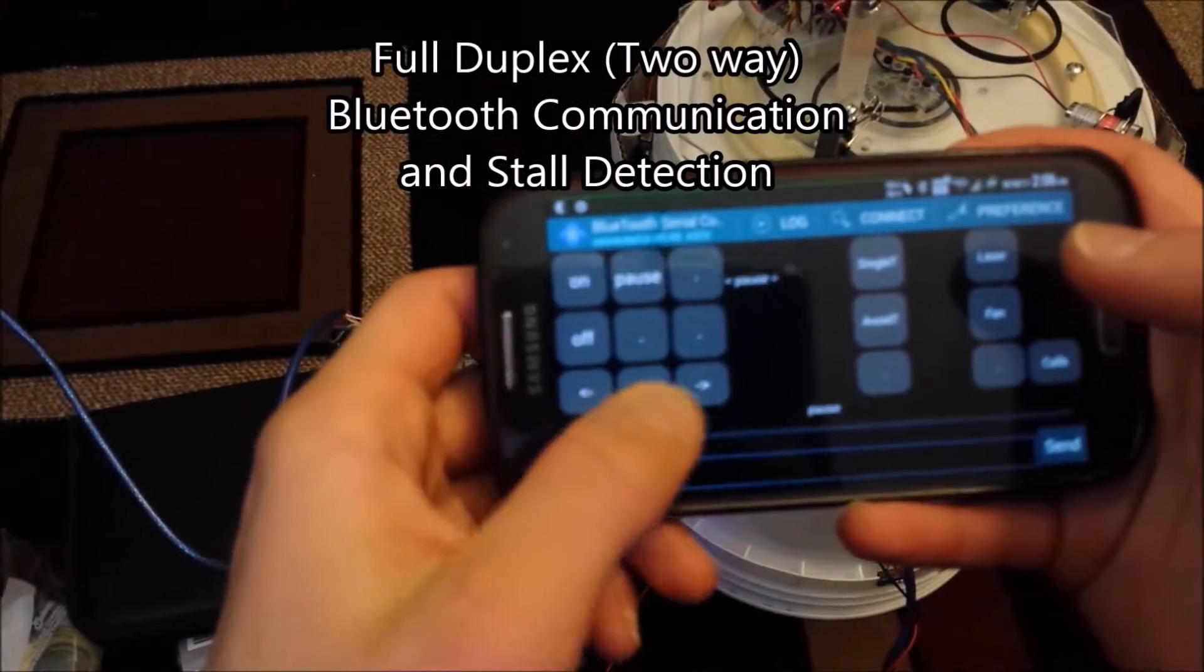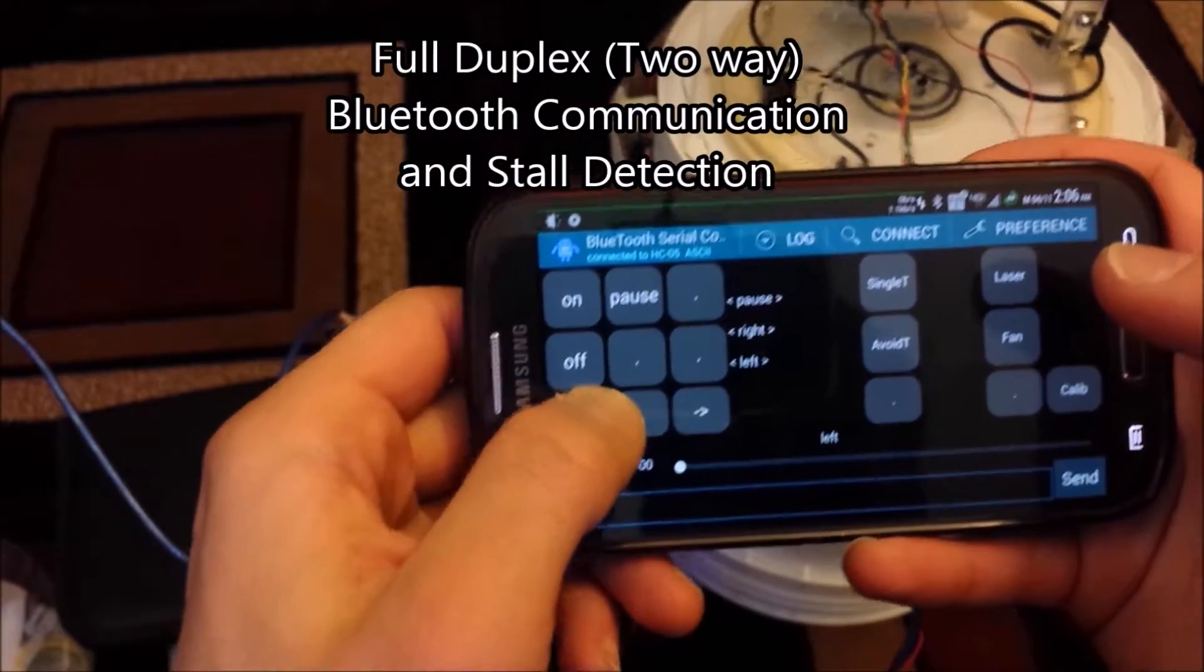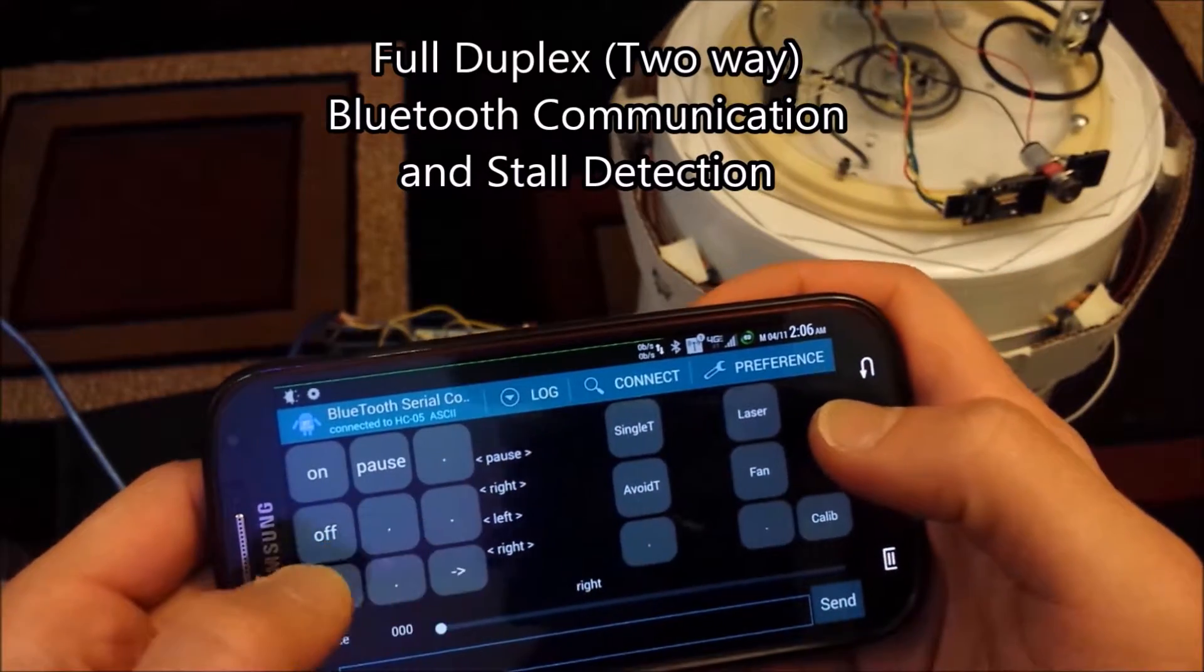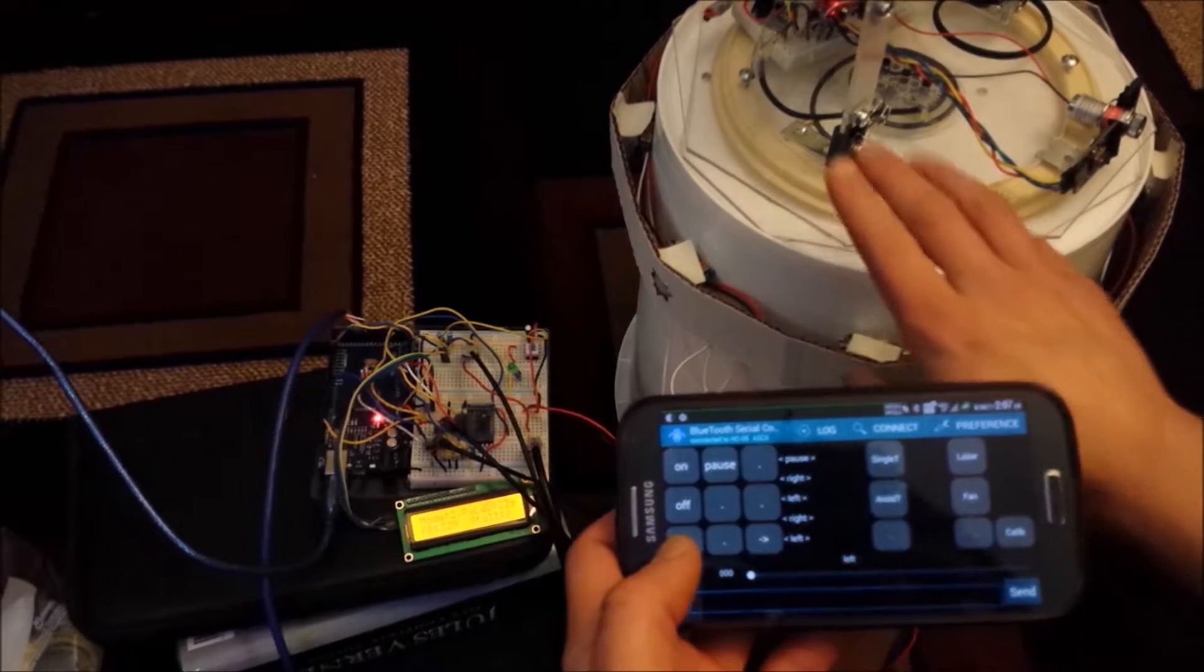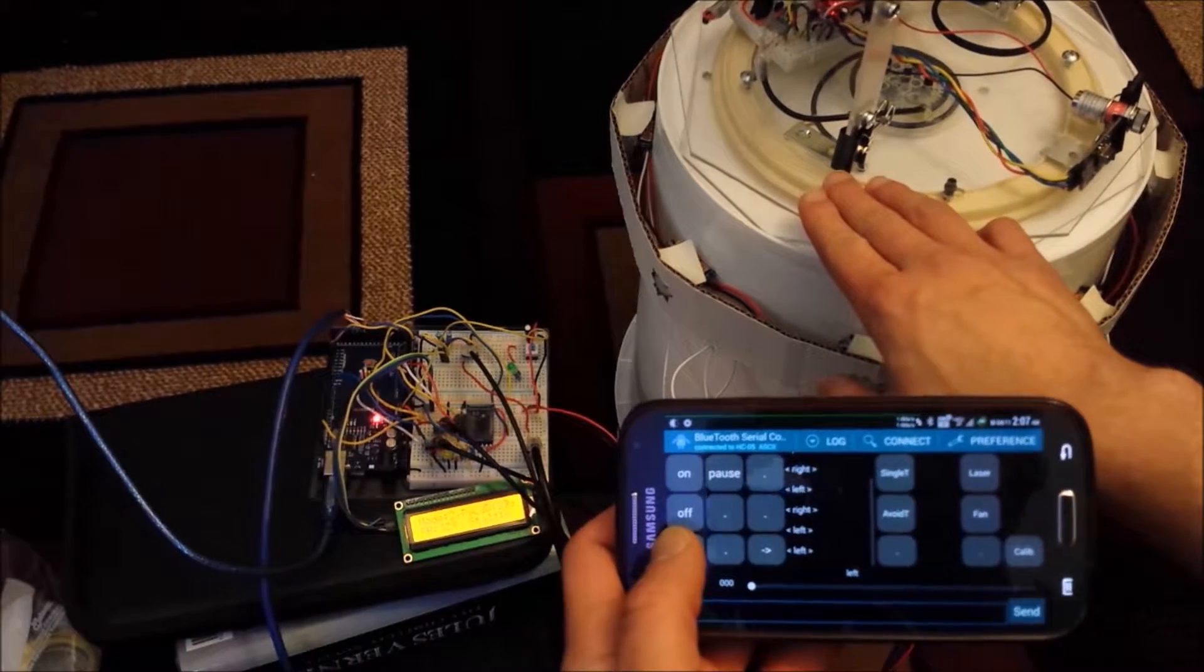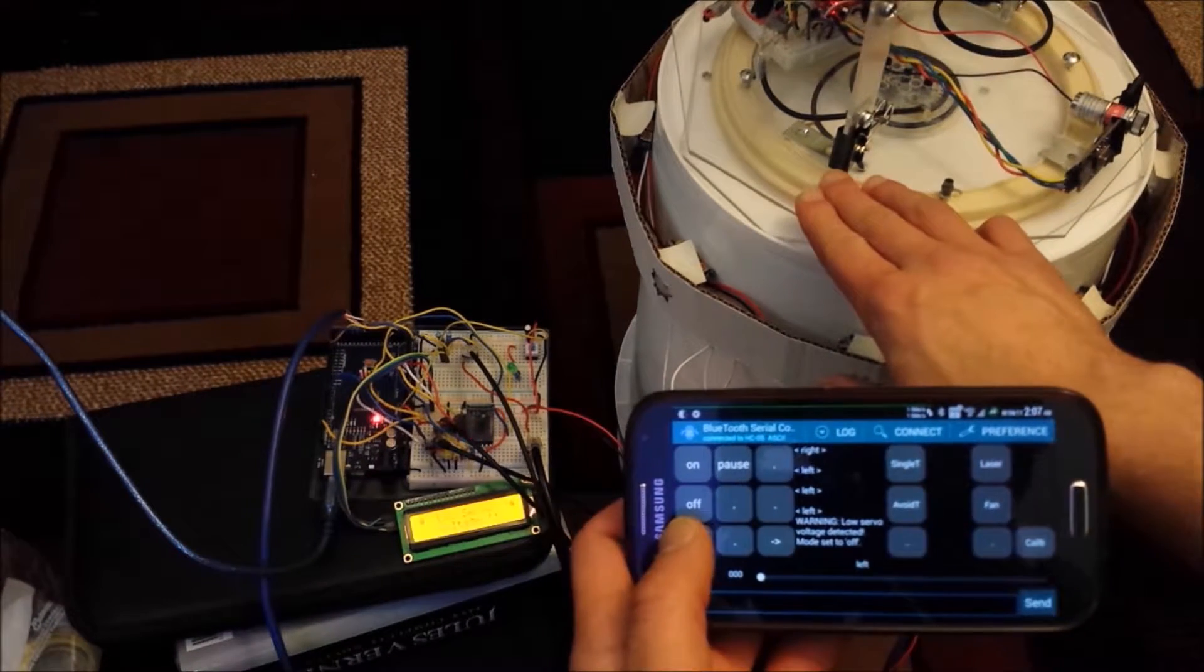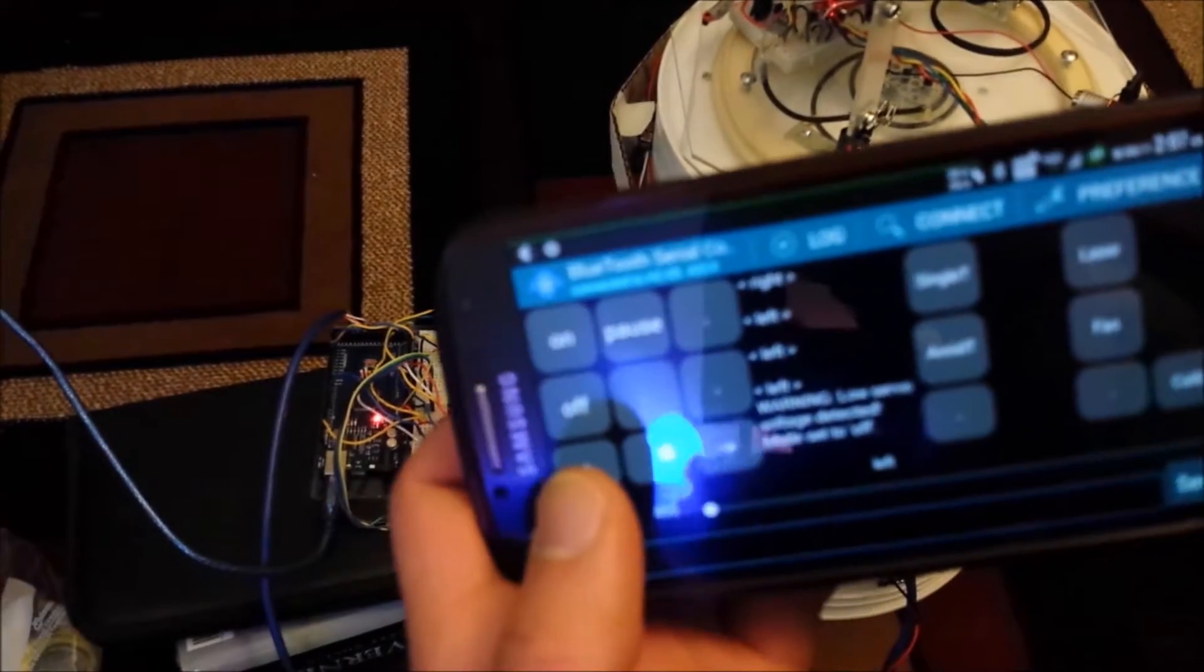The Bluetooth connection is full duplex, allowing messages not only to be received by the device, but also to be sent by the device back to the user. In this case, a stall was detected and a warning was sent.